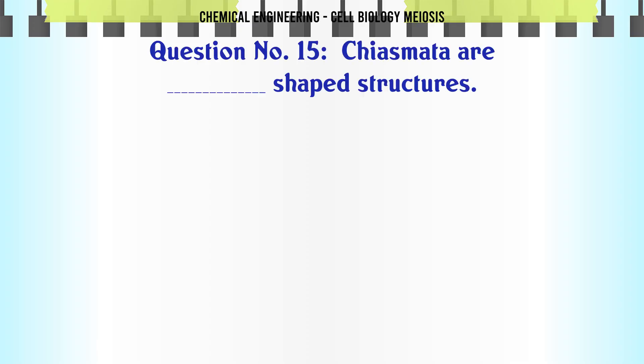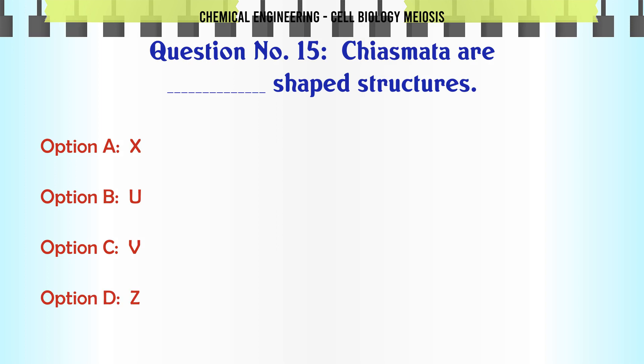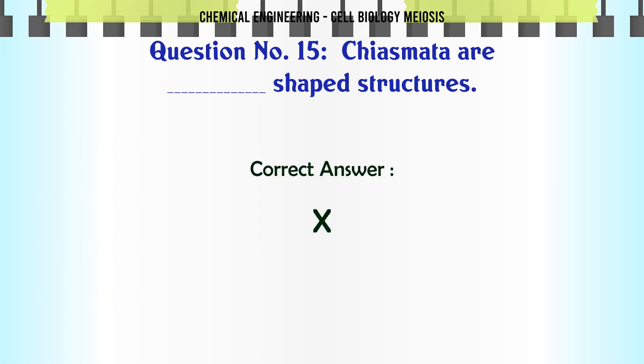Chiasmata are which shaped structures? A. X. B. U. C. V. D. Z. The correct answer is X.